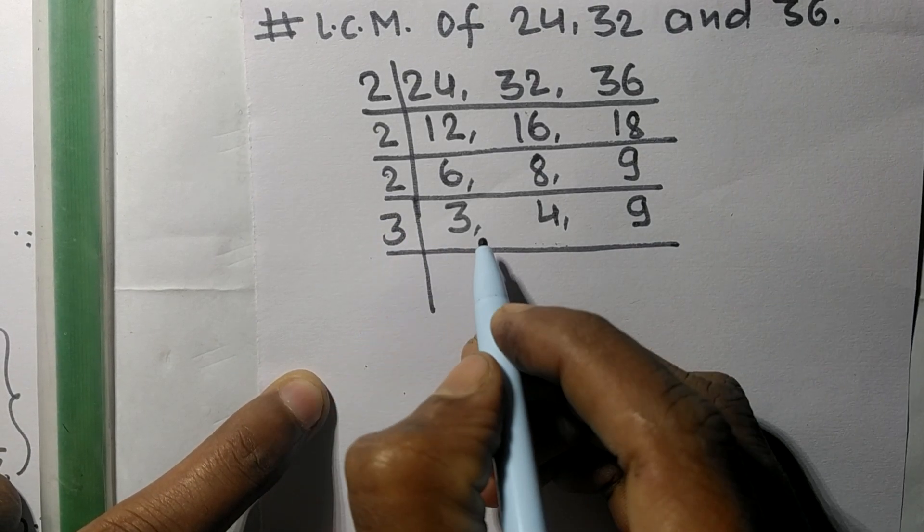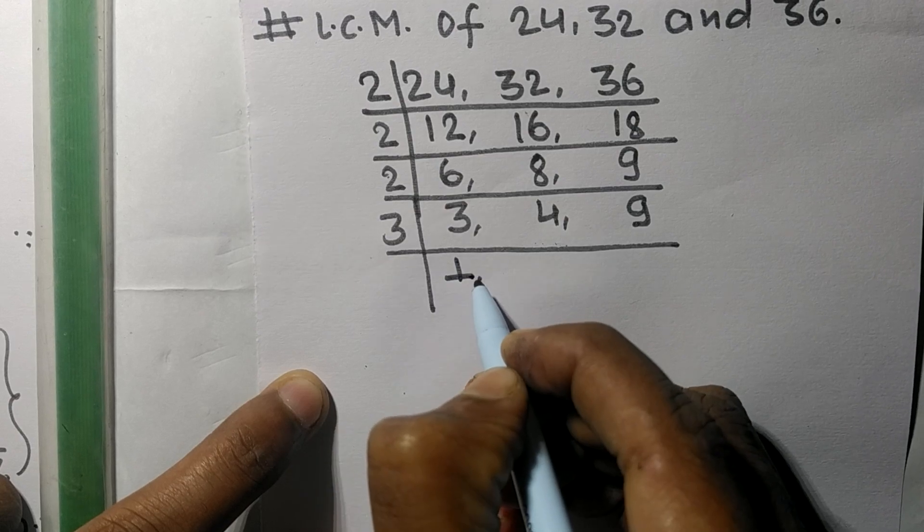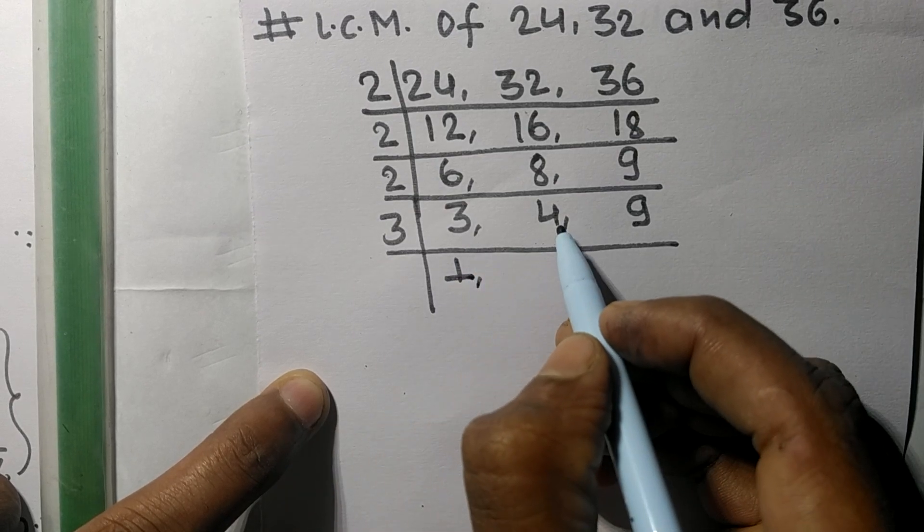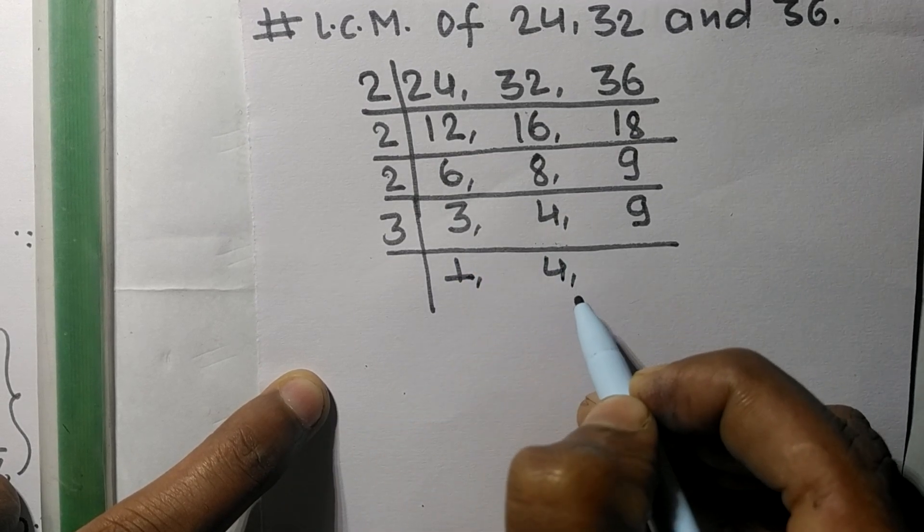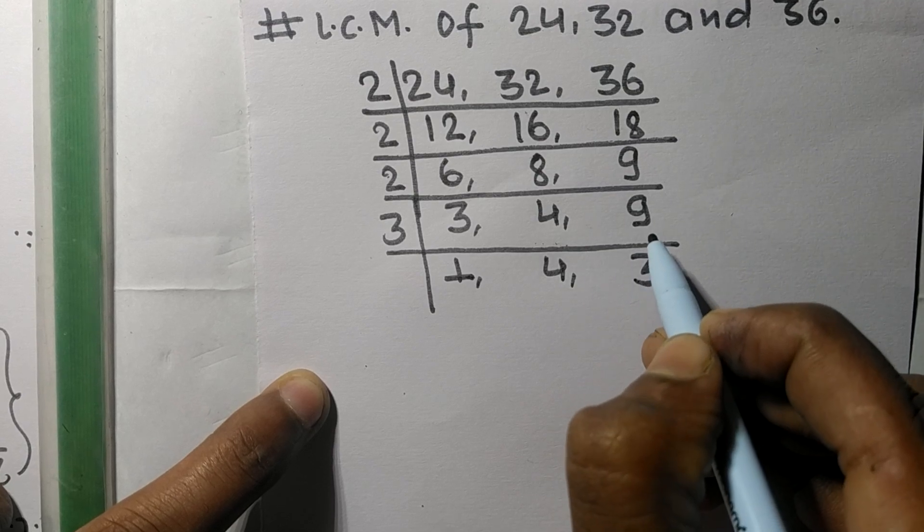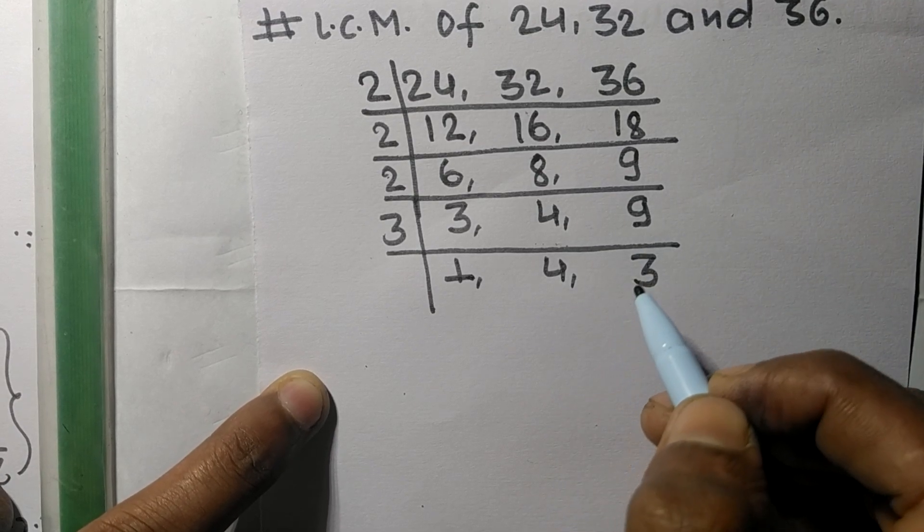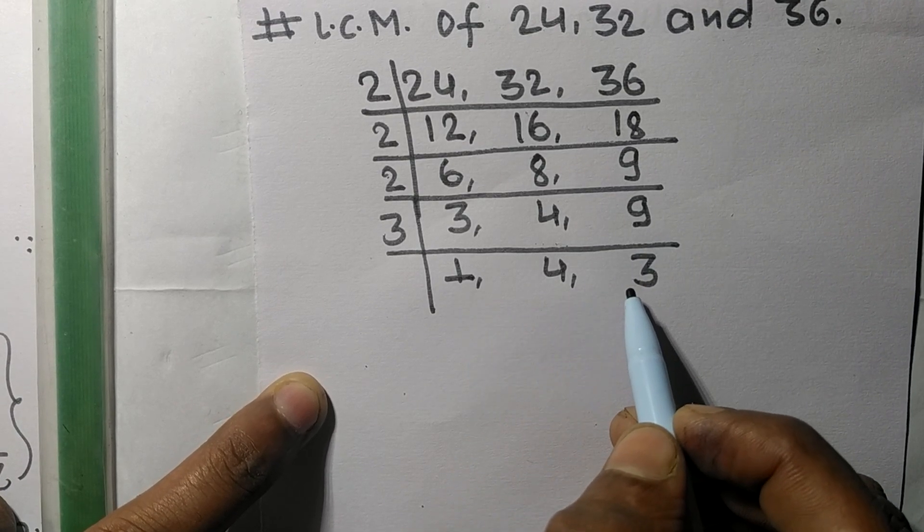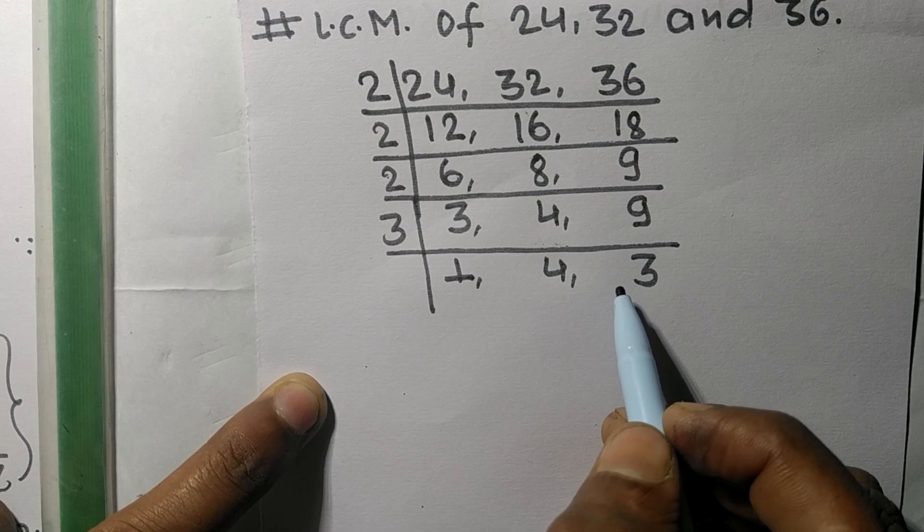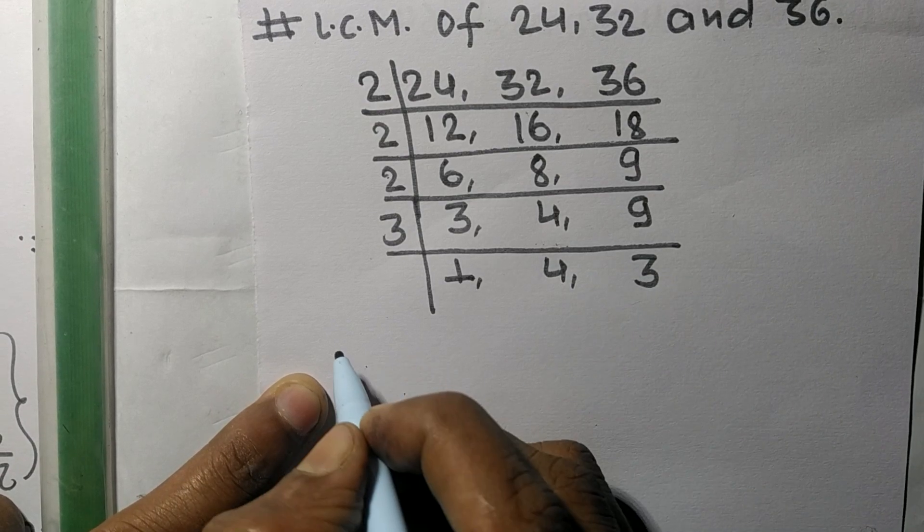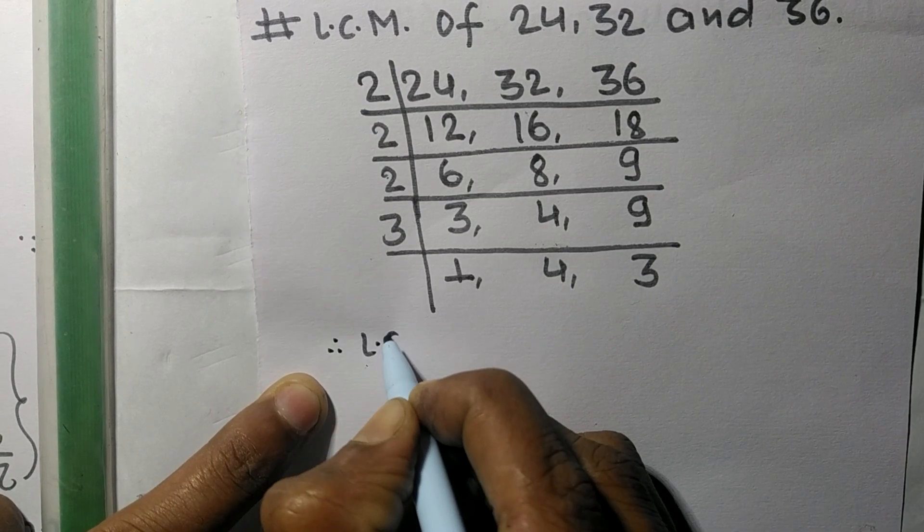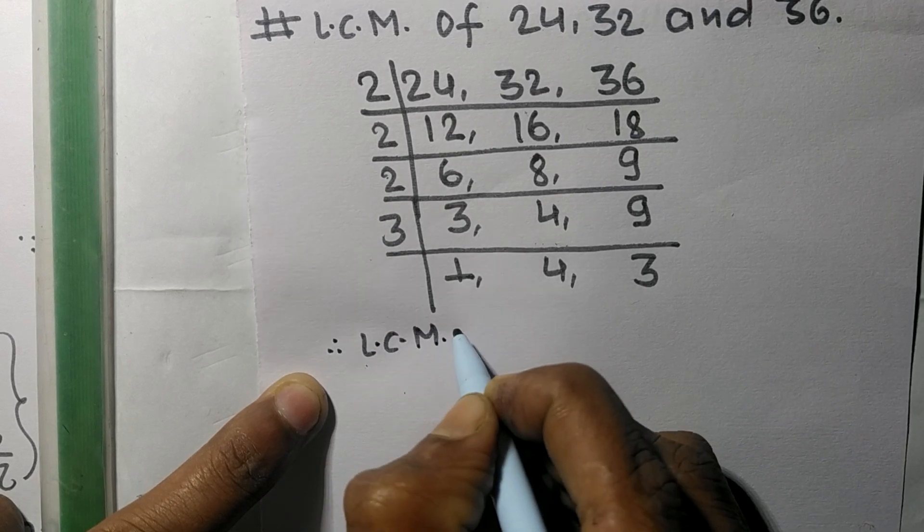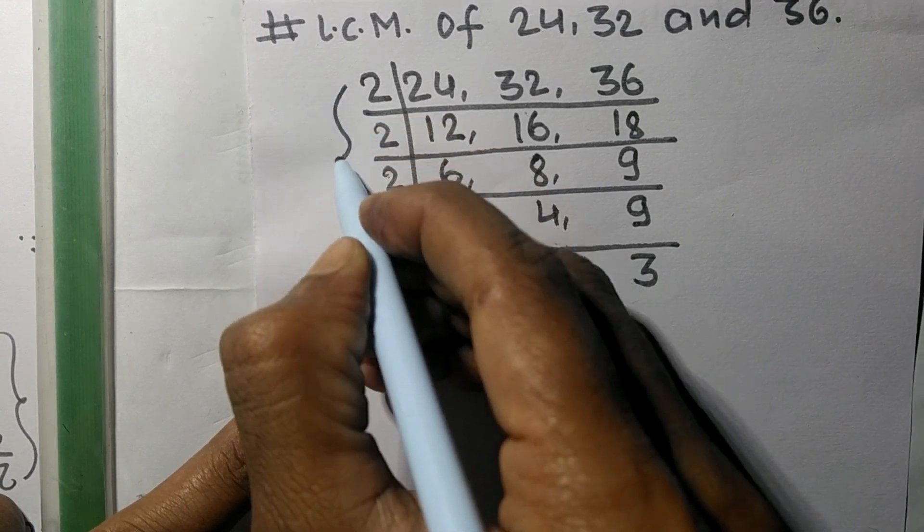So now the numbers 1, 4, and 3 are not divisible by the same number. Therefore its LCM is equal to from this side it is 2 times 2 times 2 times 3.